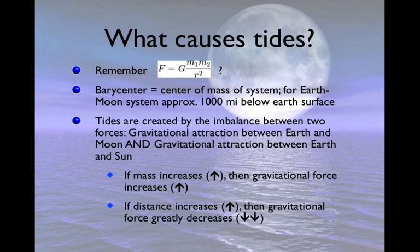So we need to talk about what causes tides. Now, remember this formula. You've seen it before, where F is the gravitational force, is equal to the gravitational constant, times the mass of the two objects, divided by their distance or their radius squared, the distance between them.